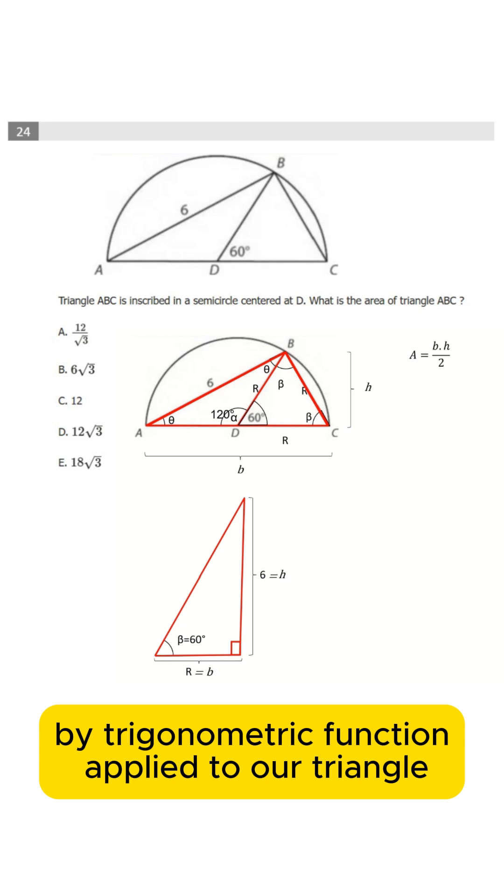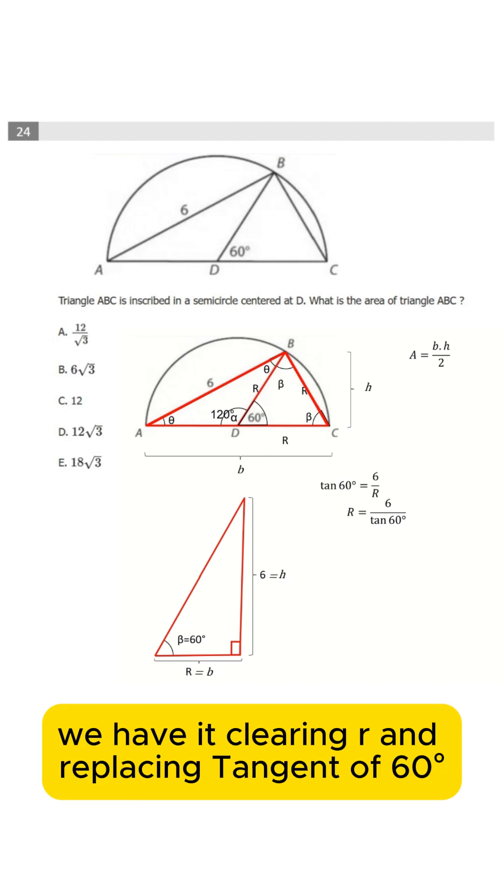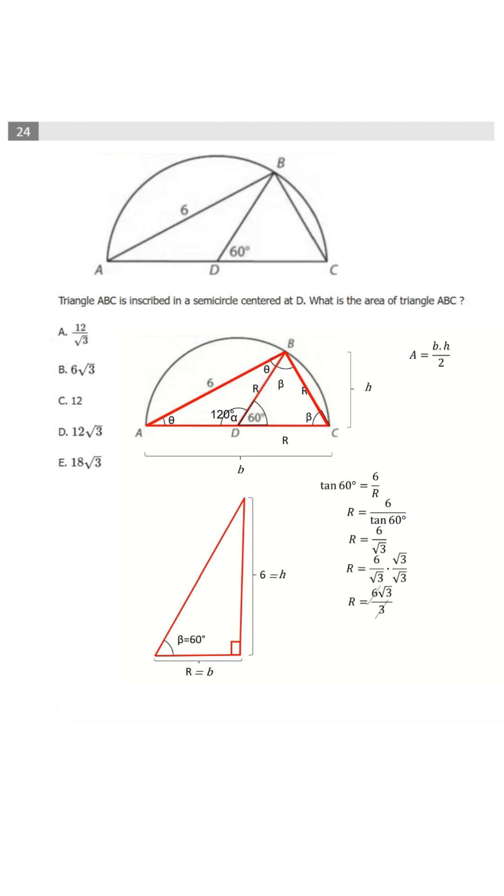By trigonometric function applied to our triangle, the tangent of beta angle is the height divided by the base. Replacing, we have it. Clearing R and replacing tangent of 60, we found R.